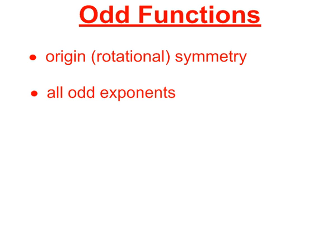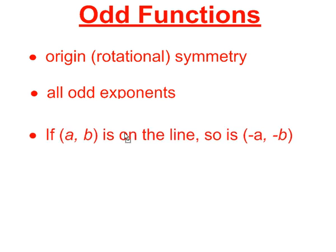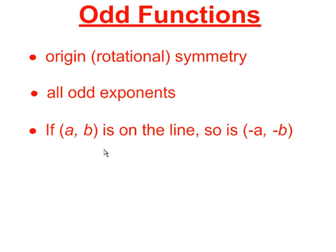Odd functions have rotational symmetry about the origin, they have all odd exponents on the variables in their equations, and another characteristic is that if the point (a, b) is on the line, then the point (-a, -b) must also be present on that line.